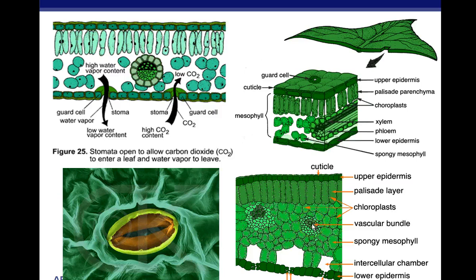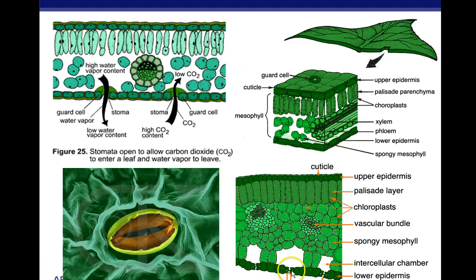Here we have our vascular bundles — these are the tubes made of xylem and phloem. Sugars are transported down through phloem and water up through xylem. At the bottom of the leaf, we have stomates — a hole that allows gases to be exchanged. On the sides of the stomates are guard cells that open and close depending on outside conditions. These stomates are found at the bottom of leaves, except in water plants like lily pads, where they're on the top.